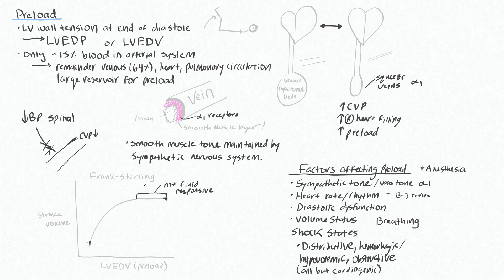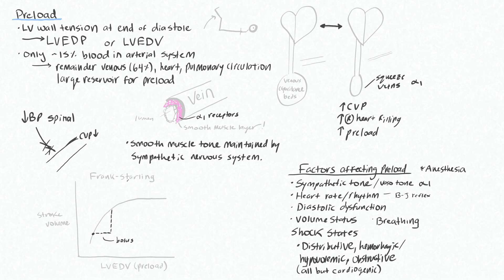Giving a patient more fluids to try to raise preload further will not increase their blood pressure when they're on that flat portion of the curve. When you are low on the curve, there is much stroke volume to be gained by increasing end-diastolic volume. If we do an intervention to increase preload — like give a bolus or do a leg raise, which essentially gives the patient a bolus of their own blood — you'll see increased stroke volume and some increase in blood pressure. As you further increase left ventricular end-diastolic volume, the returns in stroke volume become much smaller.